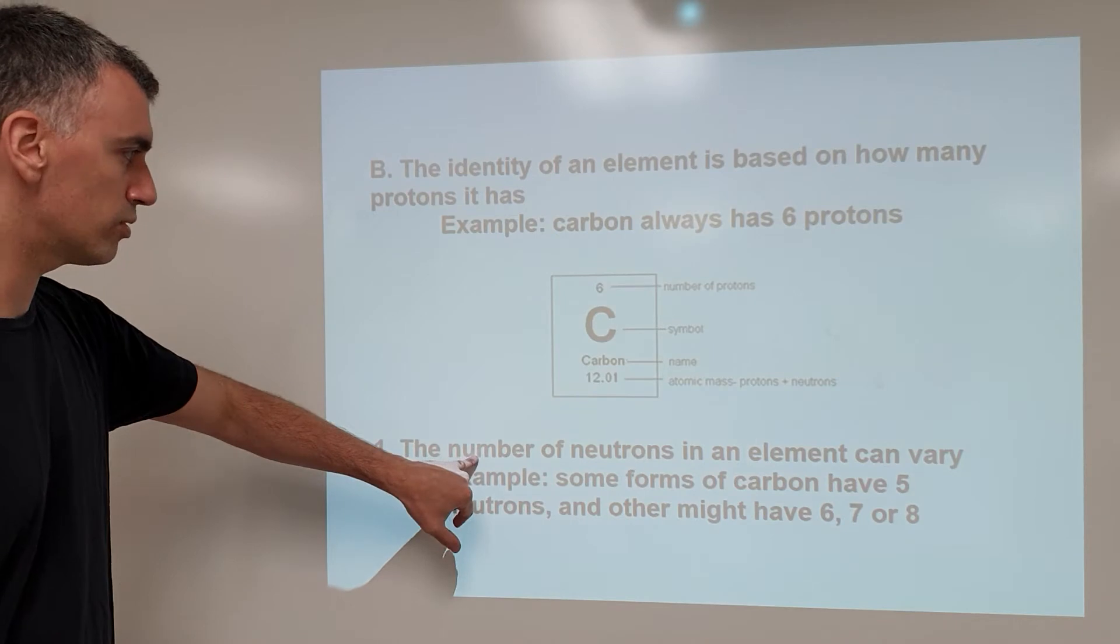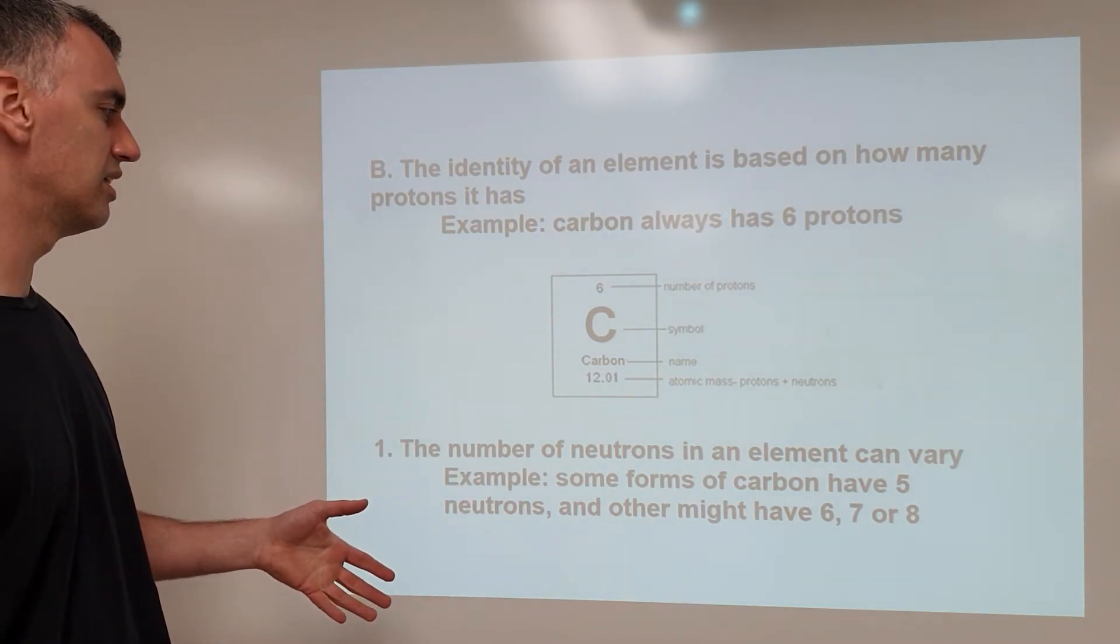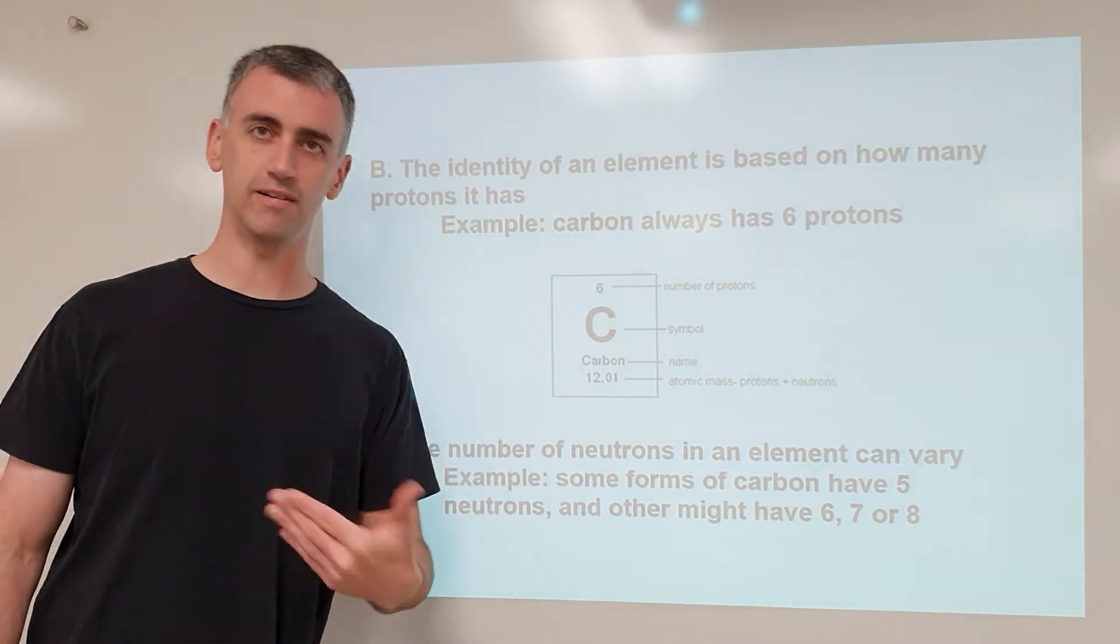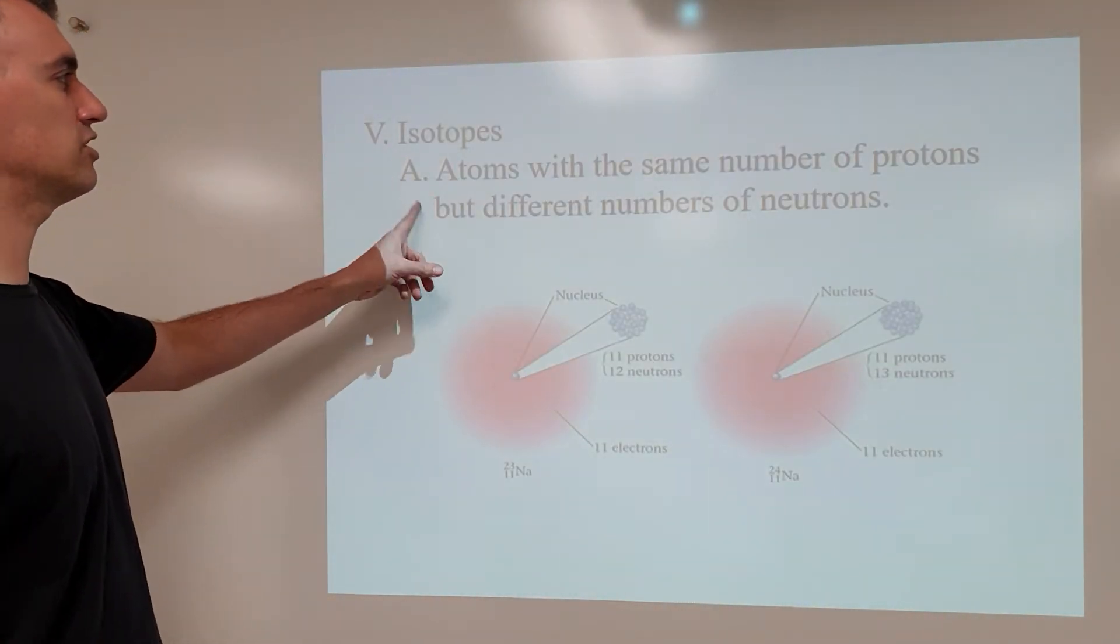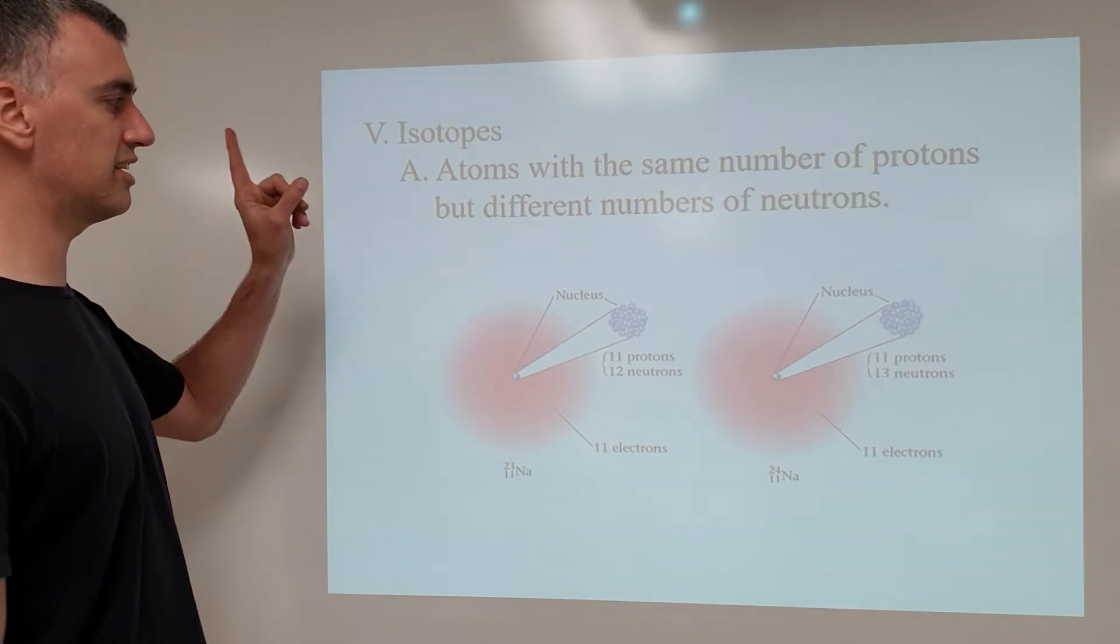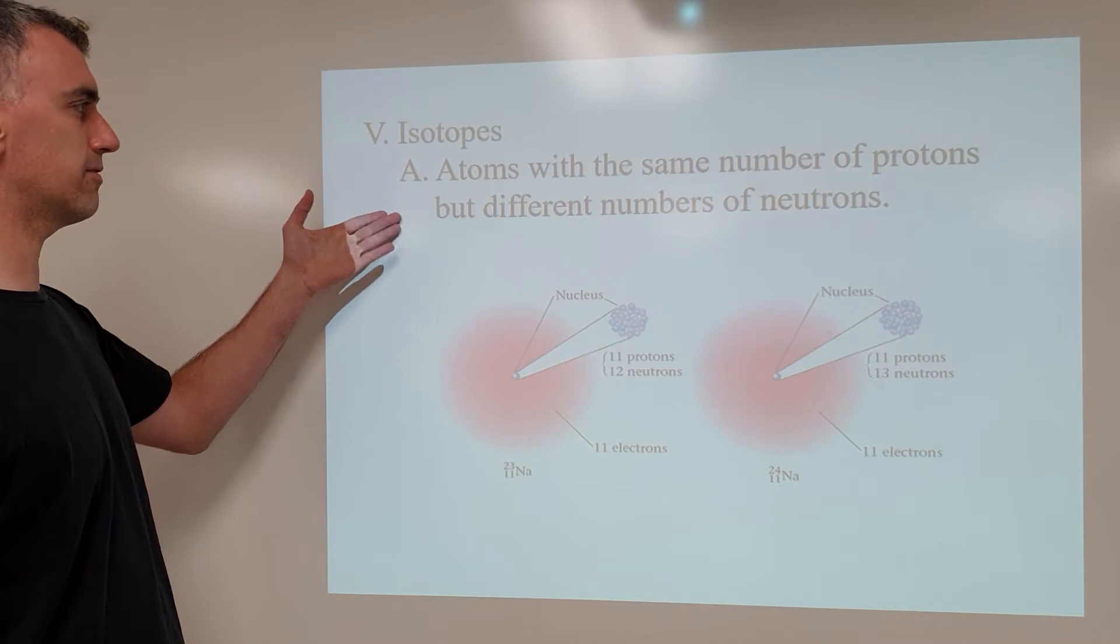So if you change the number of neutrons by contrast, you have what's called an isotope, where you can have different forms of the same element. Again, isotope is when you change the number of neutrons, but not the number of protons. Or it's the same number of protons, different number of neutrons.